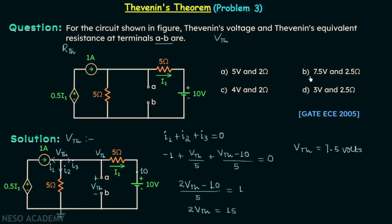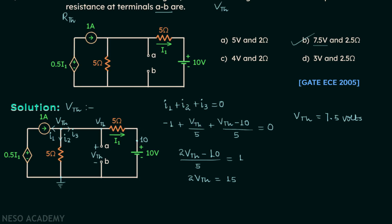Looking at the four options, Vth equals 7.5 volts only in option B, so option B is the correct option. In an exam setting there would be no need to calculate Rth at this point, but here we are practicing so we will calculate Rth as well.